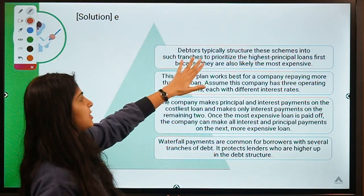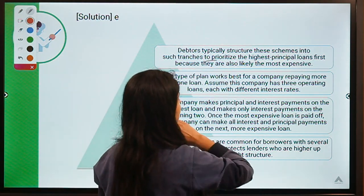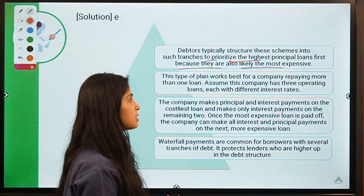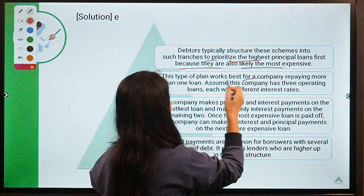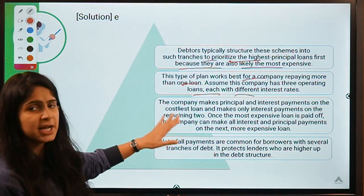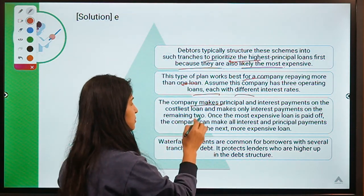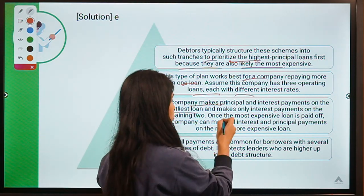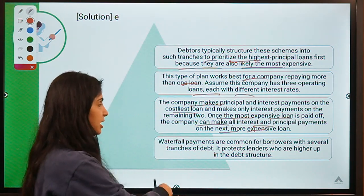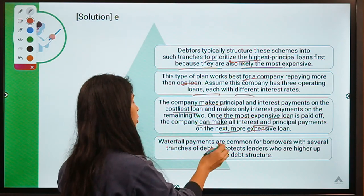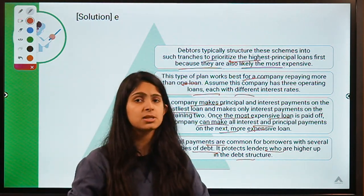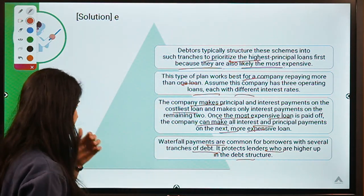Creditors are usually classified according to the cost of borrowing — a creditor charging a higher interest rate is paid off first so that the higher cost of borrowing can be saved, then the debtor moves on to the creditor charging lesser interest. It is also possible that secured creditors are paid first and unsecured creditors are paid only after secured creditors have been paid in full. This mechanism of classifying creditors into tranches and paying them sequentially is known as the waterfall structure or waterfall mechanism. It protects lenders who are higher up in the debt structure.